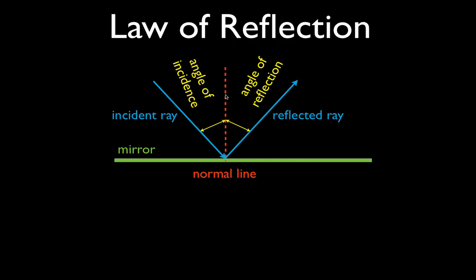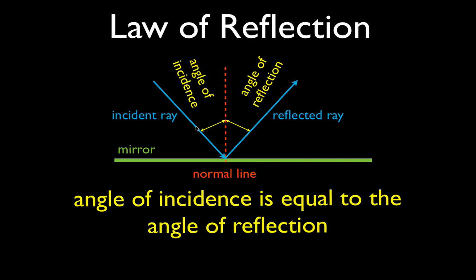Those angles are always measured from the normal line to the ray — not from the mirror to the ray — always from the normal line to the ray. And so the law of reflection is that the angle of incidence is equal to the angle of reflection.